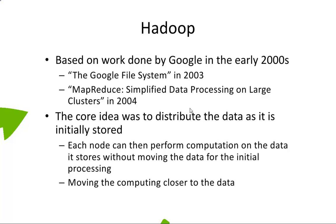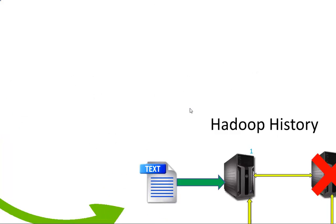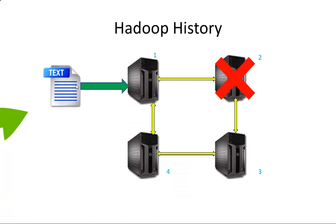In the olden days, there was a guy called Doug Cutting who was the Internet Archive director. When people were trying to search webpages, Doug Cutting was given the task to index the webpages so that results are retrieved very fast. He had a file of webpages and he wanted to index them, and the size of the file was very big.